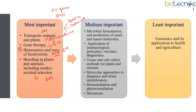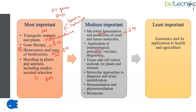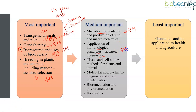Moving on to medium important topics, we have microbial fermentation — sometimes asked, sometimes skipped, but whenever asked it comes in the form of two marks. Immunological principles and diagnostics such as ELISA and RIA techniques are not frequently asked, but when they are, it again comes in the form of four marks. It is not as frequent as other topics, which is why it is kept under medium important. Tissue culture techniques also fall here.